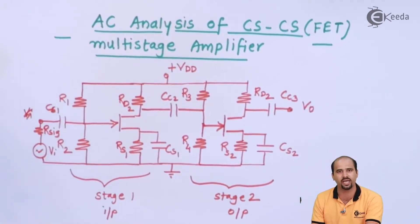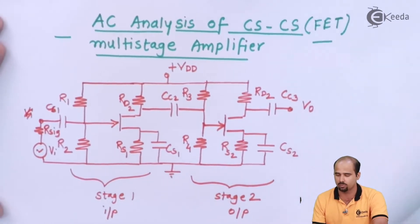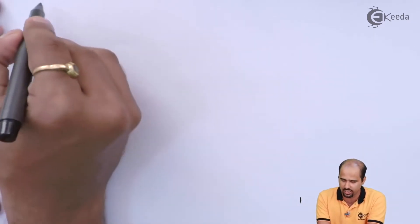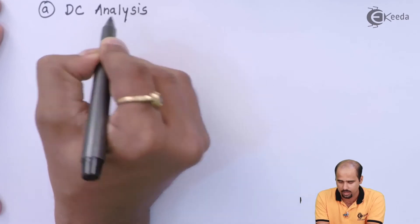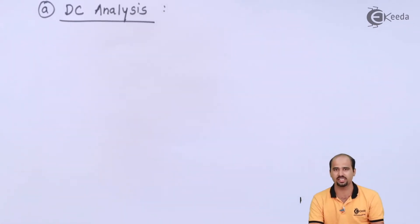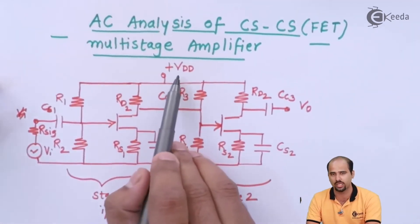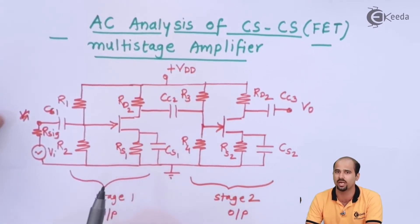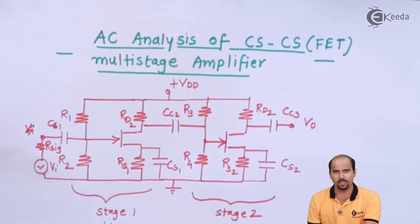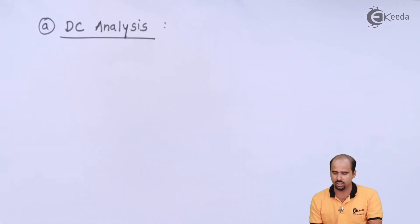Before jumping directly into AC analysis, we will learn some logic behind it. Step A will be DC analysis. Whenever we are learning DC analysis, DC means direct current — we are checking how much DC voltage is applied so that we get the particular reference point, the Q point, which is based on the required operating condition. So before jumping into AC analysis we will first start with DC analysis.